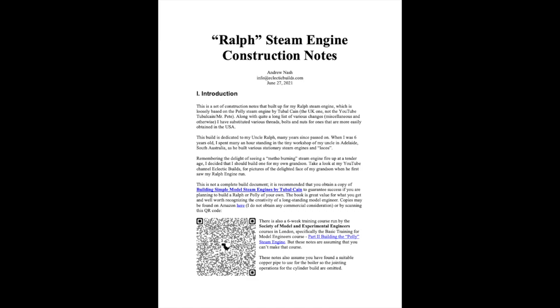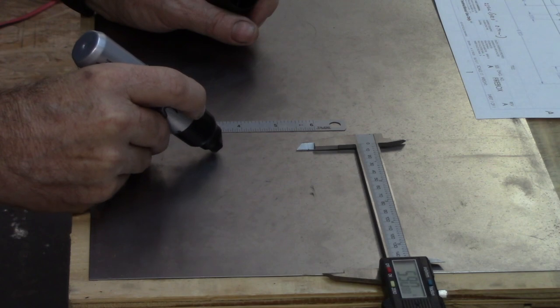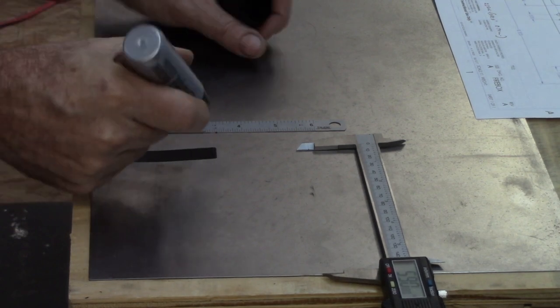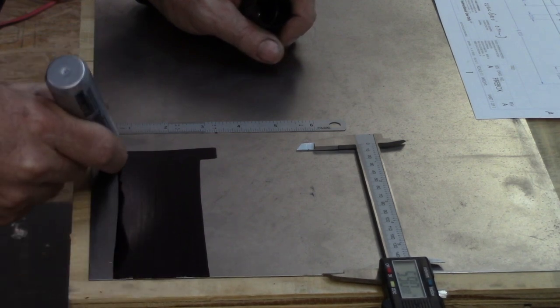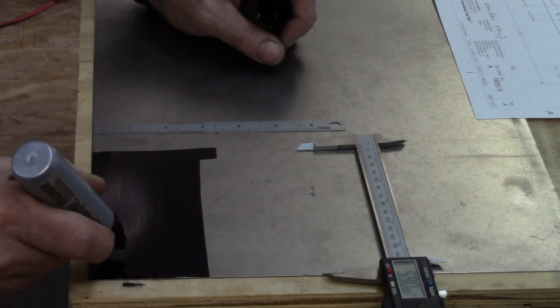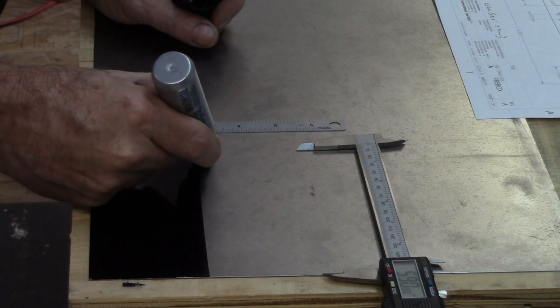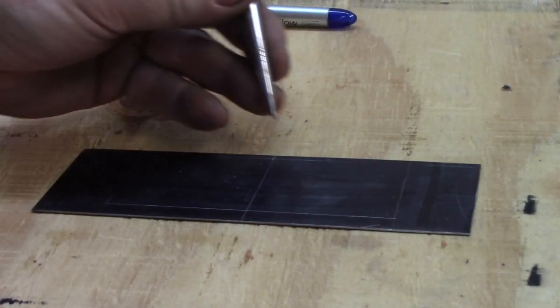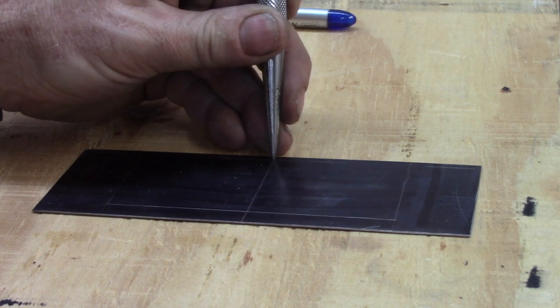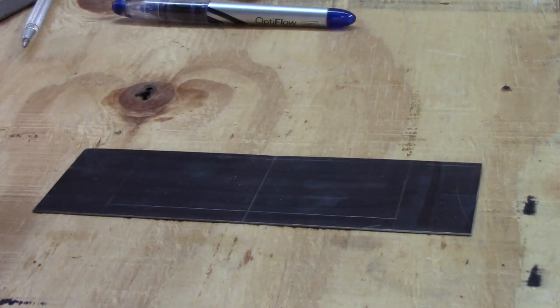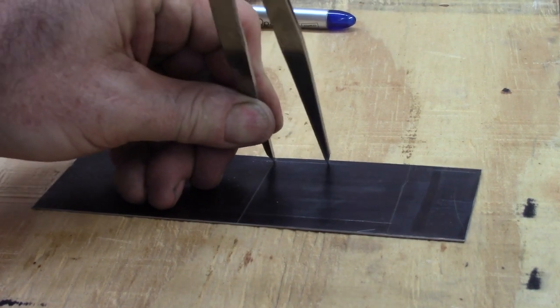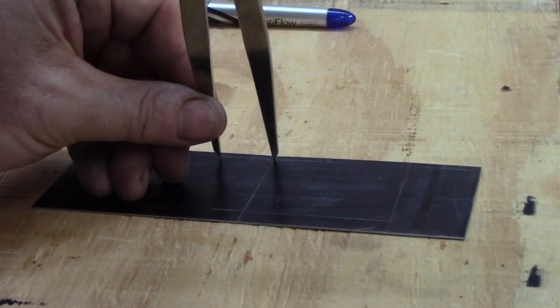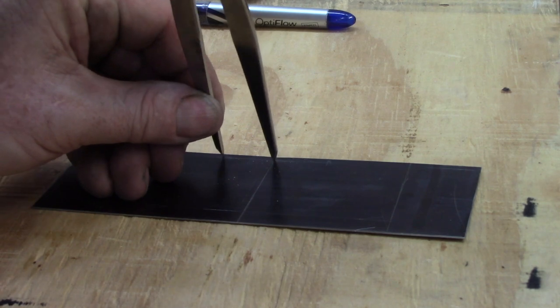Construction notes describing the part and the machining operations can be found at the Eclectic Builds website listed in the description. To start, a wide marker pen is used to apply layout die on a sheet of mild steel—not quite as effective as blue Dykem marking die but more convenient. The initial layout lines are scribed onto the sheet steel using a height gauge. The positions for the holes are established by using a prick punch and a set of calipers to progressively work from the central datum line.